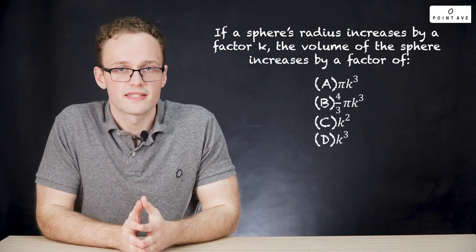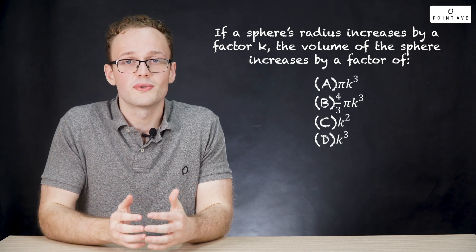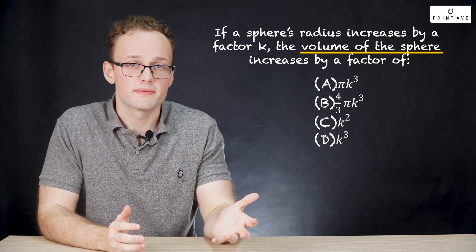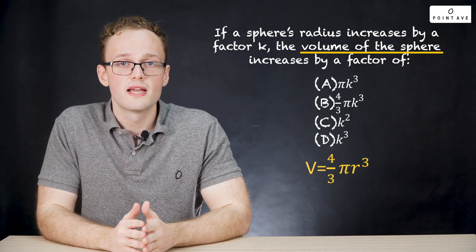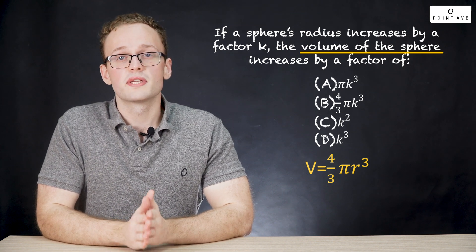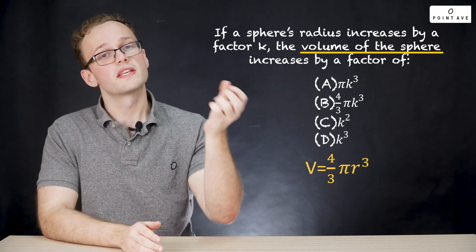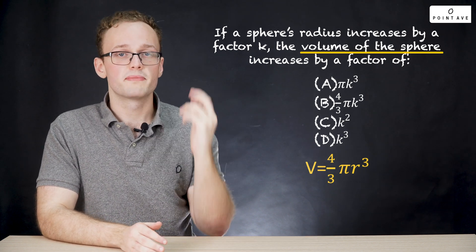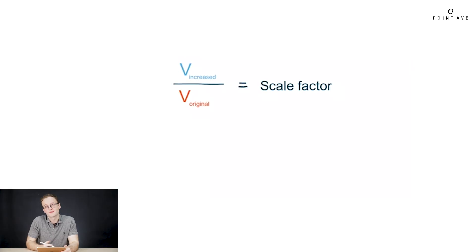So whenever you see a scaling problem like this, you want to start by writing out exactly what quantity you are analyzing. In this case, volume. So we write out the volume of a sphere, 4 thirds pi r cubed. Remember, if you forget that, just look to the start of the test. And next, what we're really looking for from this is the ratio of the increased volume over the original volume. So we can evaluate both of those, divide them out, and get our answer.